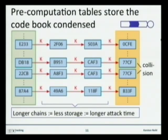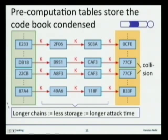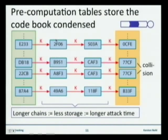The idea is to only store the first and last value in the table on hard disk, but include all values in between during computation. This means you can look up any value in between without actually storing them. In this case the function k is the A5.1 function. For an output of 2f06, we know the secret key that went in is e233 — but we don't intuitively know that if we only store the green and yellow columns on the hard disk.